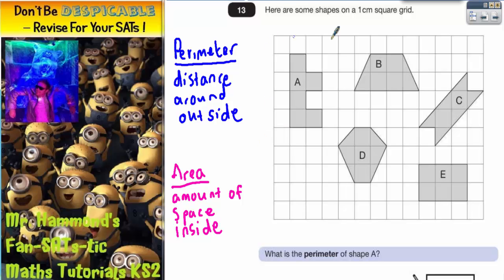Question 13. Here are some shapes on a 1cm grid: A, B, C, D and E.